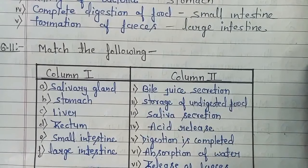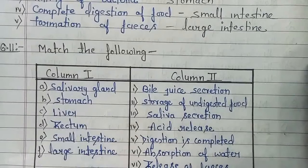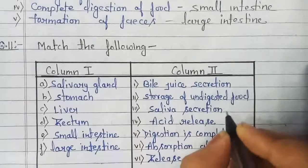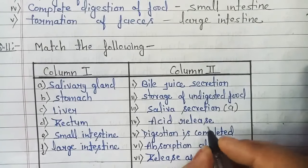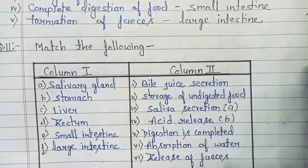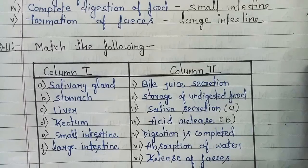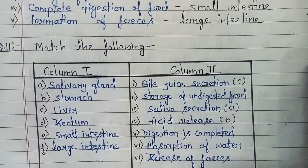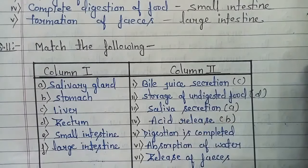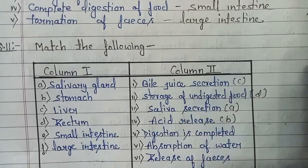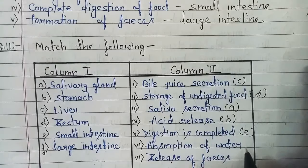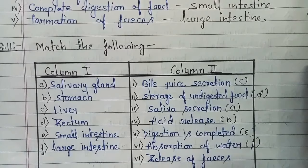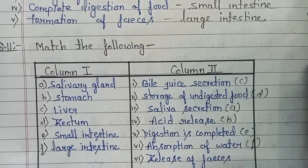Now the last question, question number 11: match the columns. The salivary gland produces saliva. The stomach releases acid. The liver secretes bile juice. The rectum is where digestion is complete. And the large intestine is responsible for absorption and release of feces.